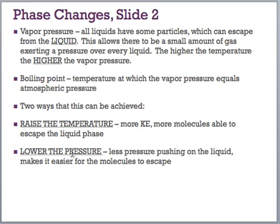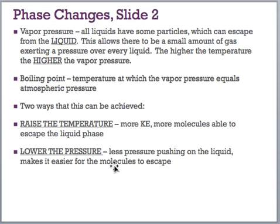There are two ways you can achieve boiling point. The most common is to raise your temperature — you're adding kinetic energy and the molecules are able to escape. Another less typical way is to lower your pressure; if there's less pressure, the molecules don't need as much energy to escape. You can actually look this up on YouTube — if you have a vacuum pump, you can lower the pressure enough to boil water at room temperature, which is really unusual.